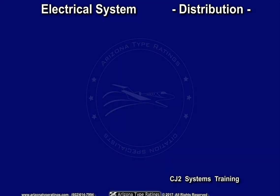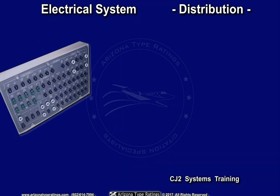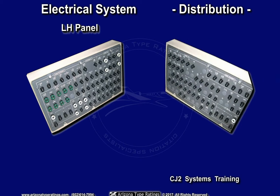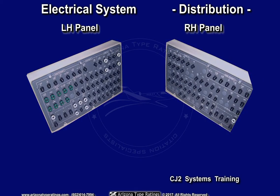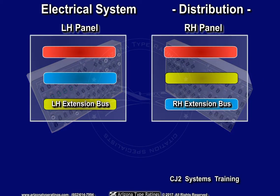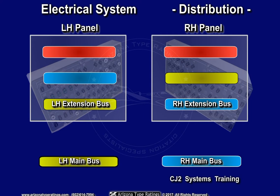All DC power is distributed to the various devices through the left and right circuit breaker panels. The left and right extension buses in the left and right circuit breaker panels are each connected to their respective buses using three parallel feeds.